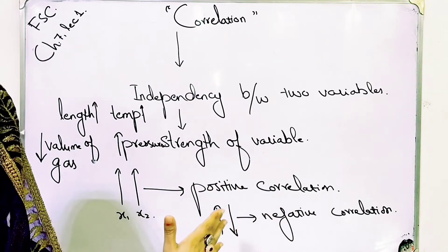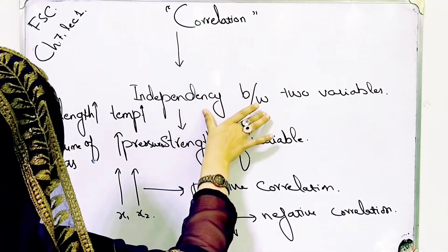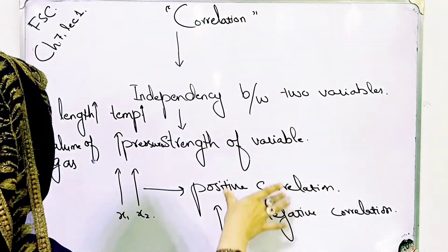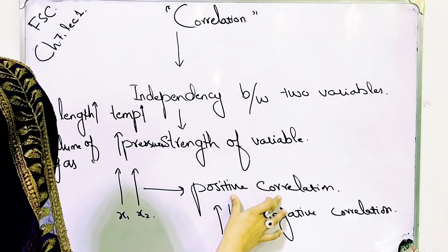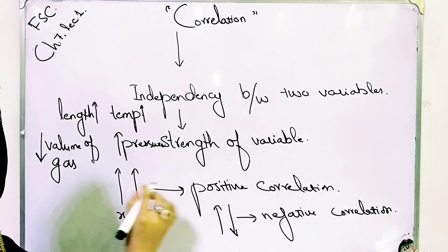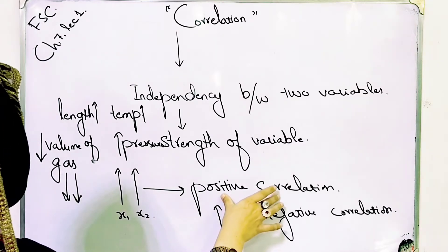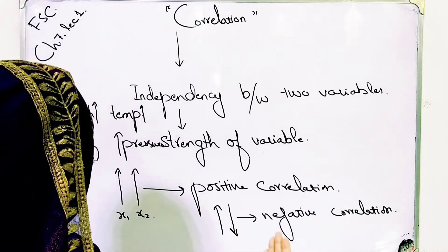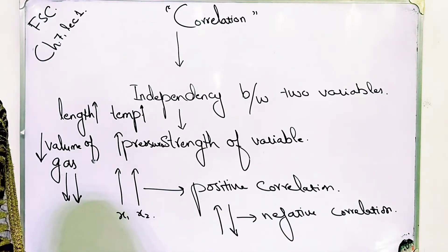This is very important: we measure the interdependency between two variables as correlation. We divide it into positive and negative correlation. Positive or direct correlation means both variables flow in the same direction — if one increases, the other increases; if one decreases, the other decreases. If the variables move in opposite directions, that is called negative correlation.